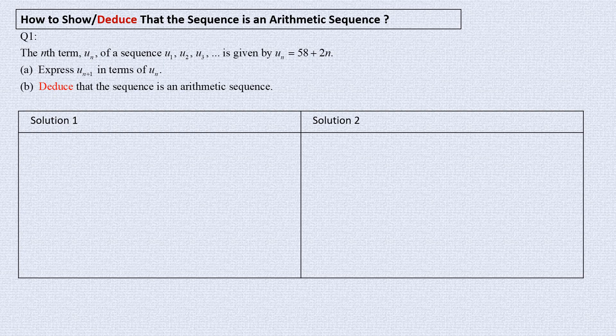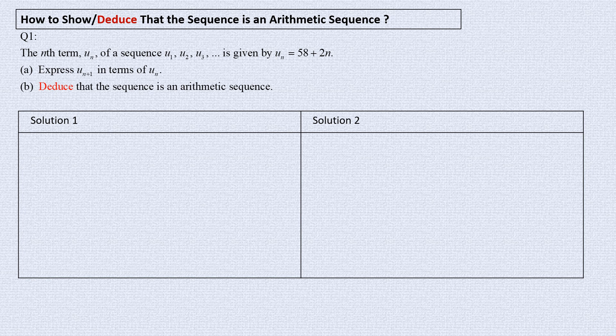Now, in this question, you are given the term un and we want to find un plus 1. By substituting n with n plus 1, you can find the term un plus 1. So, this is the term un plus 1 in term of un.